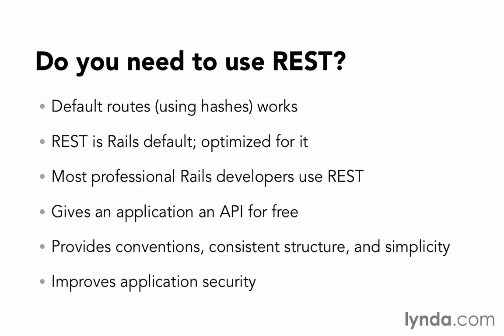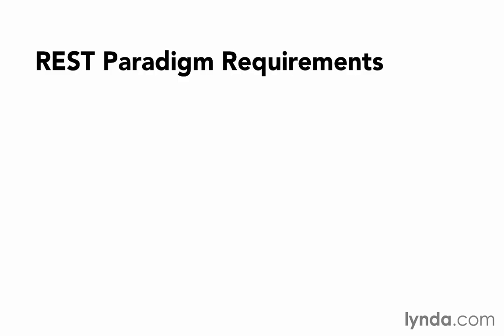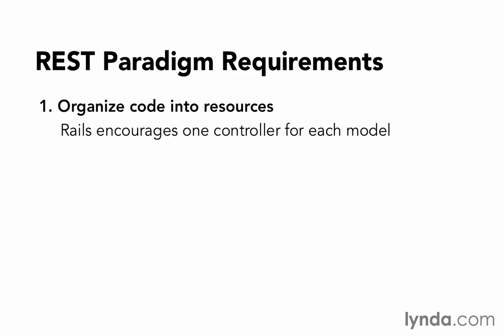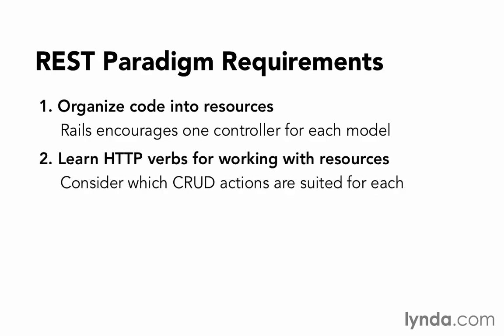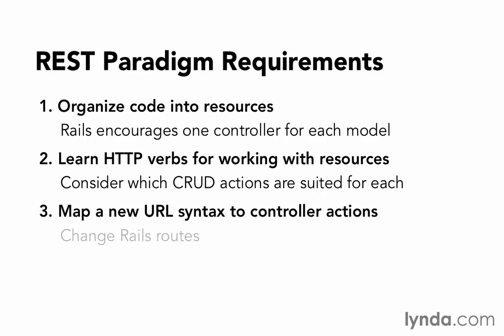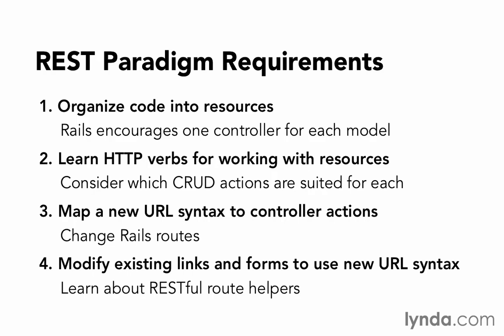REST also improves our application security. To start using REST, there are four changes that we're going to need to make to our way of thinking and to our code. The first is that we'll need to organize our code into resources — we've already been doing that, and Rails encourages one controller for each model. Number two, we'll need to learn some new HTTP verbs for working with resources, and consider which of our CRUD actions are suited for each one of those. Then we'll need to map a new URL syntax to our controller actions, which means changing our Rails routes so we'll have a new URL structure routed through to our controller actions. And then we're going to need to modify our existing links and forms to use that new URL syntax, and we'll learn about the RESTful route helpers that Rails offers us to make that easy.